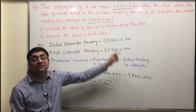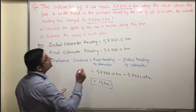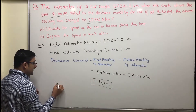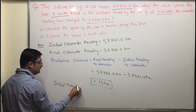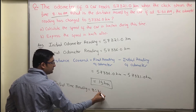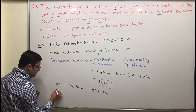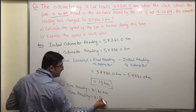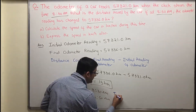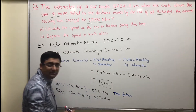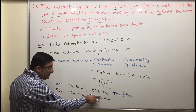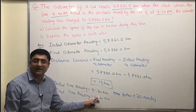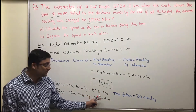The next part is to calculate the speed of the car. For speed, we need both distance and time. The initial time was 8:30 AM and the final time was 8:50 AM. Time taken equals final reading minus initial reading: from 8:30 AM to 8:50 AM, that is 20 minutes. So time taken is 20 minutes.